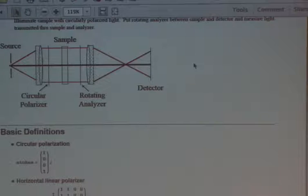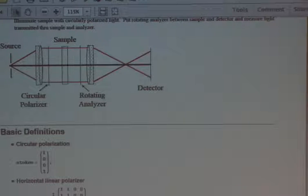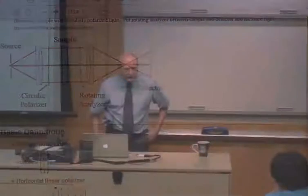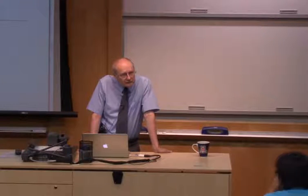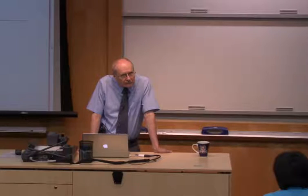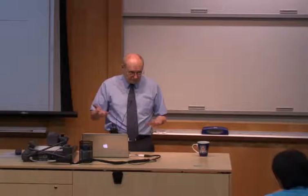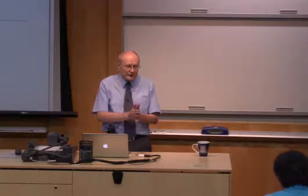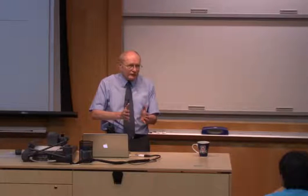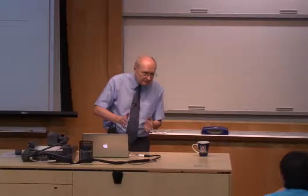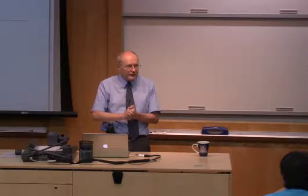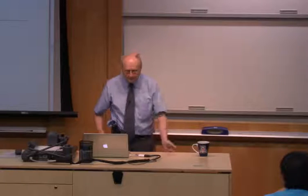That's one convenient method for measuring birefringence — there are many others. The units of birefringence are nanometers per centimeter, representing the optical path difference between S and P components per unit thickness. It could also be expressed as phase per centimeter, but nm/cm is the common convention.